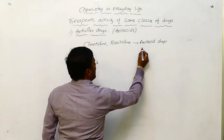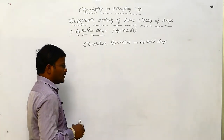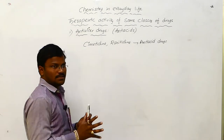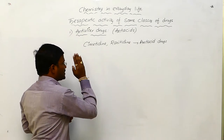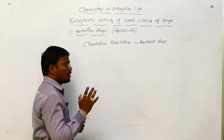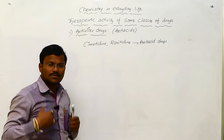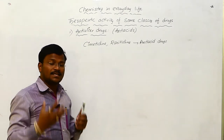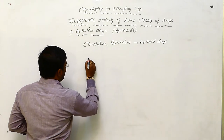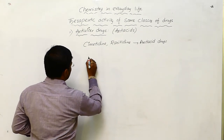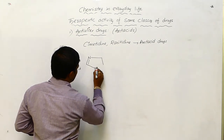Antacid drugs can reduce the production of HCL. Cimetidine and ranitidine are anti-histamine drugs, meaning upon use these drugs interact with histamine receptors and block their activity. Moving on to the structure of these substances.